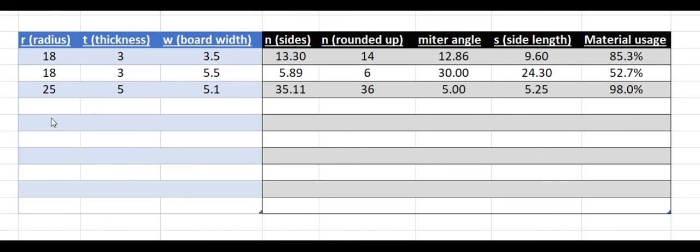Let's enter one that I can build in my garage as a test. Say a six inch inner radius with a 2.5 inch thickness, and I'm going to use two by fours, which are three and a half inches wide. So I'm going to need to build a hexagon, and my side lengths are going to have to be just shy of 10 inches, and my efficiency is going to be not so great. About two-thirds of the wood will be used. So let's go build that.